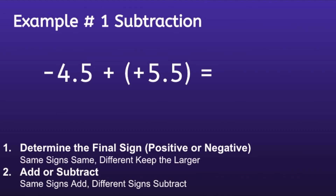Step one: Determine the final sign. If I look at my numbers, I can see the first number is negative and the second number is positive, so we will use 'different keep the larger.' Which means we will take the sign of the number with a greater absolute value. We can determine which one that is by looking at the numbers, ignoring the negative sign. Which number is bigger — 4.5 or 5.5? If you said 5.5, you're exactly correct. And since that's a positive number, I know my solution will also be positive.